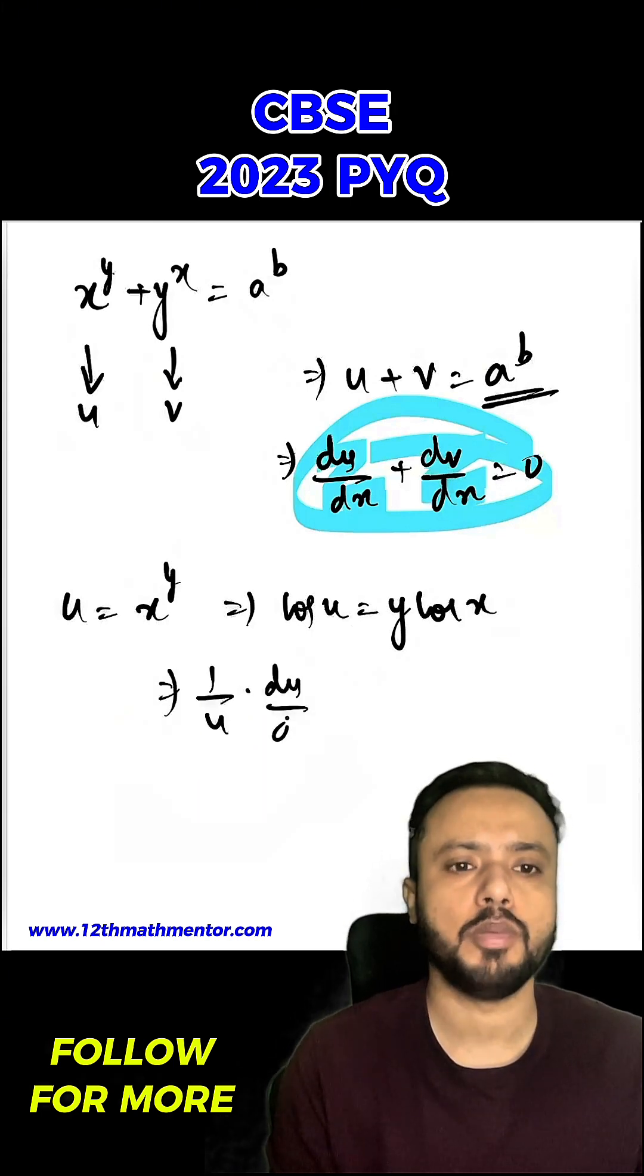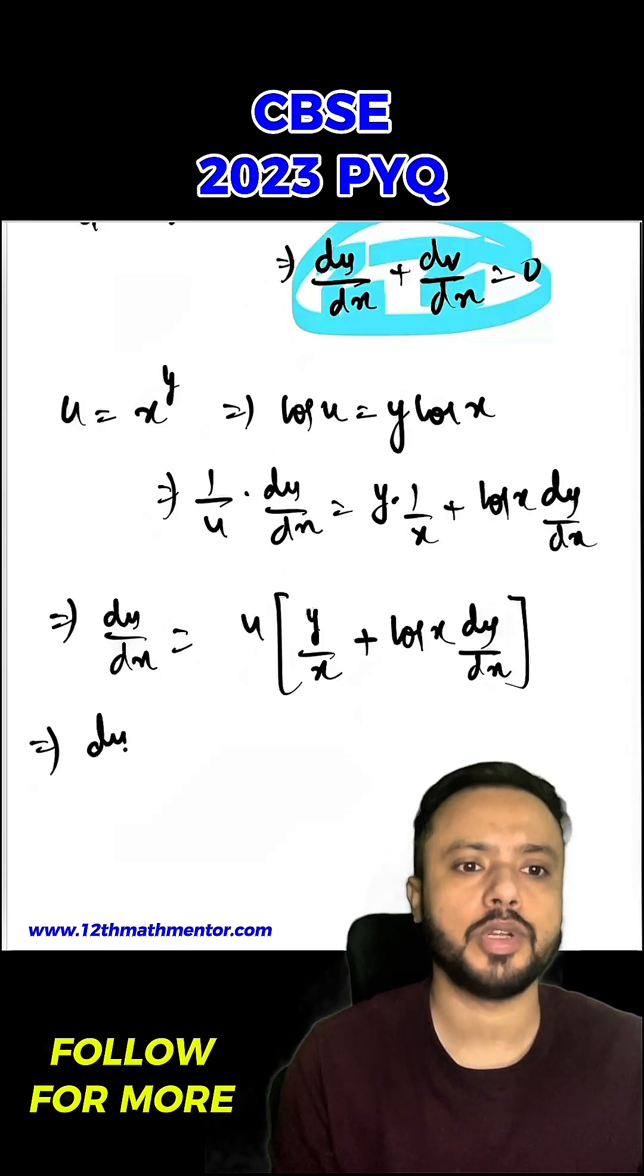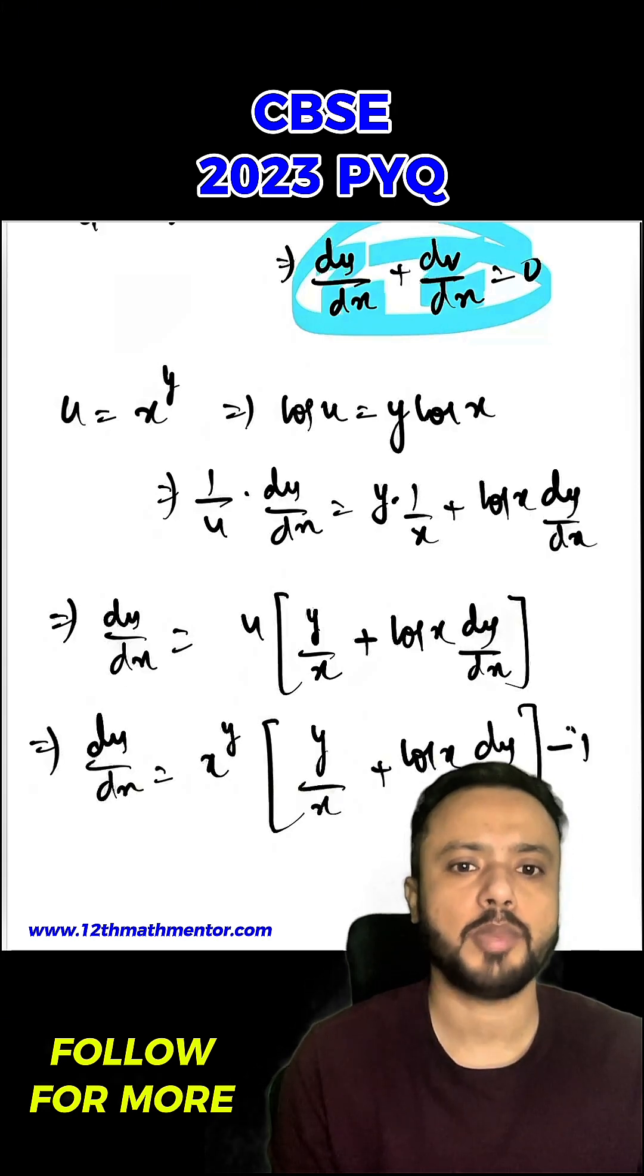So you will get 1 upon u into du upon dx equals to y into 1 upon x plus log x into dy upon dx and now we will substitute the value of u. So du upon dx will be equal to x raised to the power y into y upon x plus log x into dy upon dx. So this is the first equation.